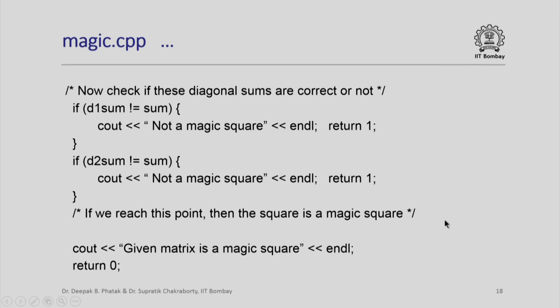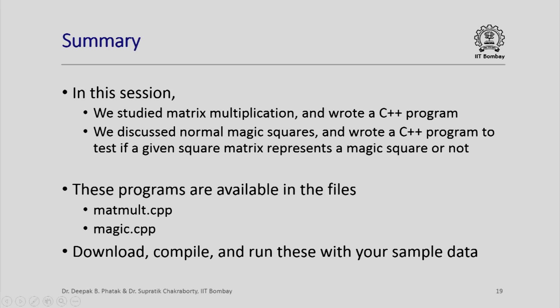So in this interesting session, we learned about magic squares and saw how to manipulate matrices to find their row sums, column sums, diagonal sums, and so on. We also wrote a program for multiplying matrices — a simple and elegant program that can handle even a 100 by 100 matrix. These programs are available as matmult.cpp and magic.cpp. Please download, compile, and run them with your own input. Thank you very much.